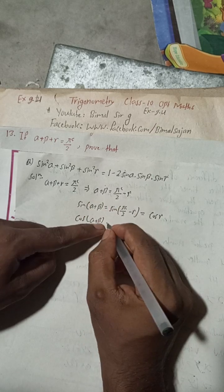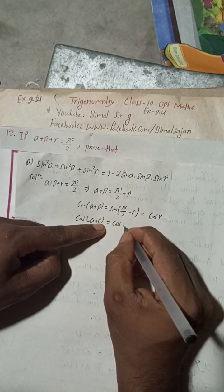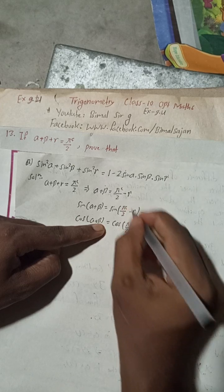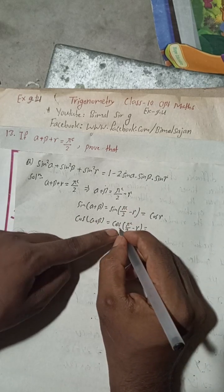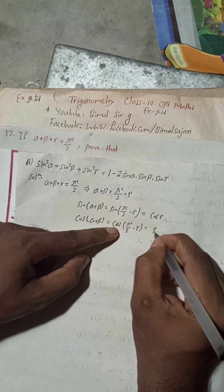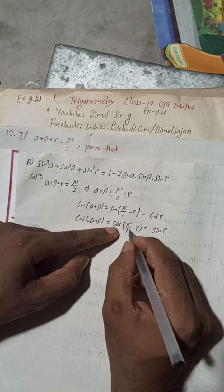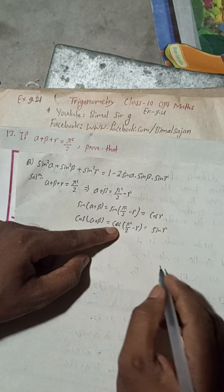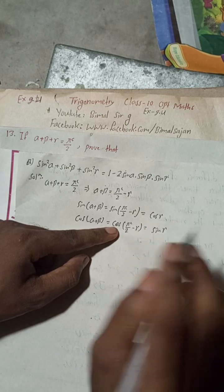When we take cosine on both sides, cos(α + β) = cos(π/2 − γ). Now, cos(90° − γ) = sinγ, and since 90° − γ is in the first quadrant, all values — sine and cosine — are positive.